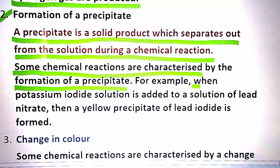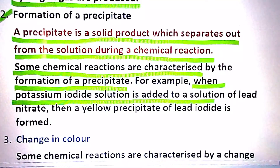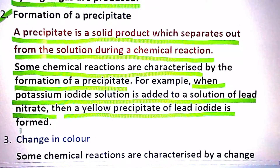For example, when potassium iodide solution is added to the solution of lead nitrate, then a yellow precipitate of lead iodide is formed.